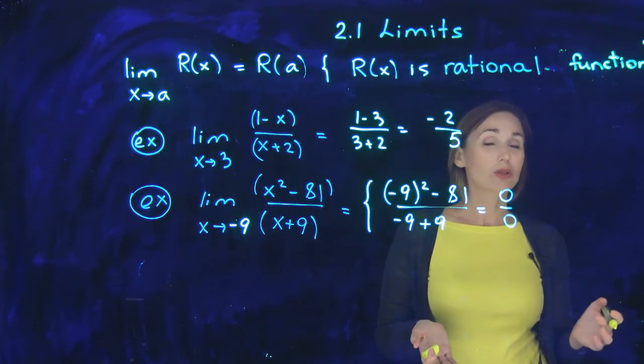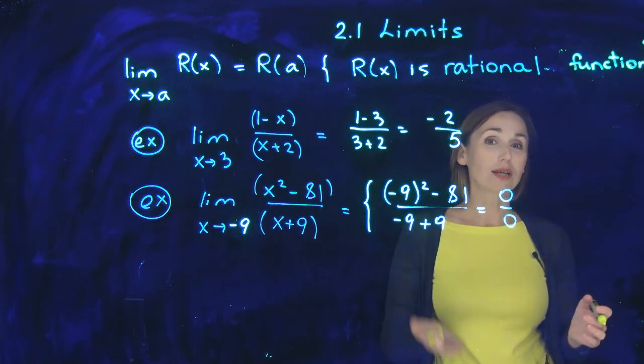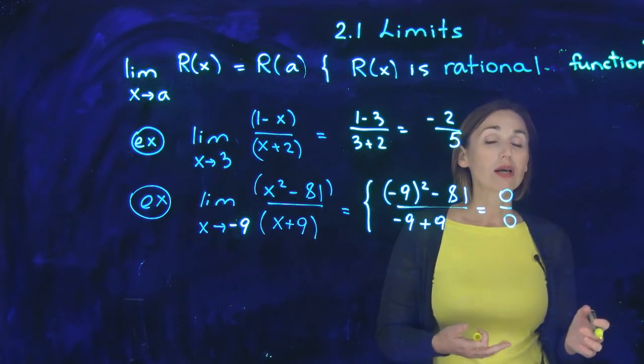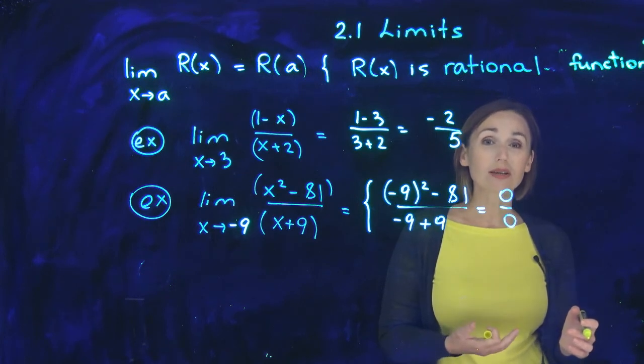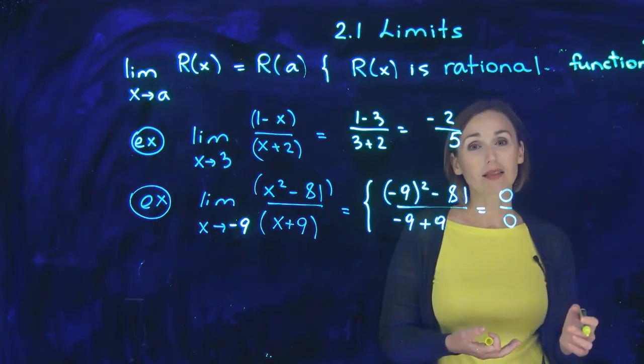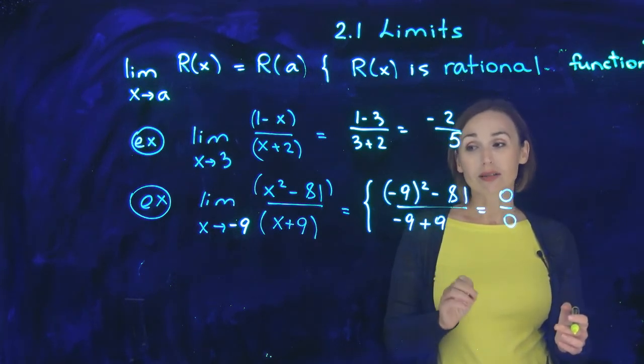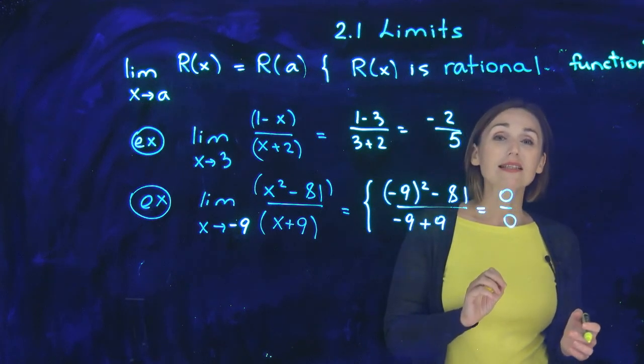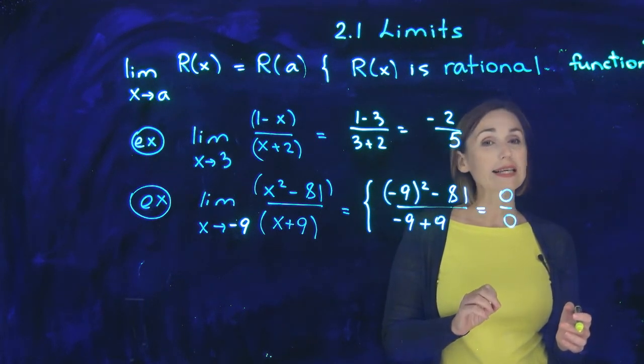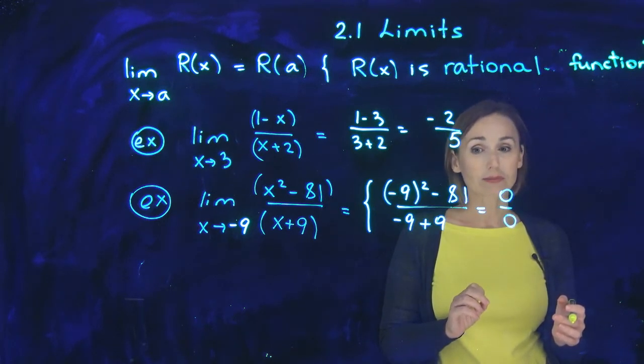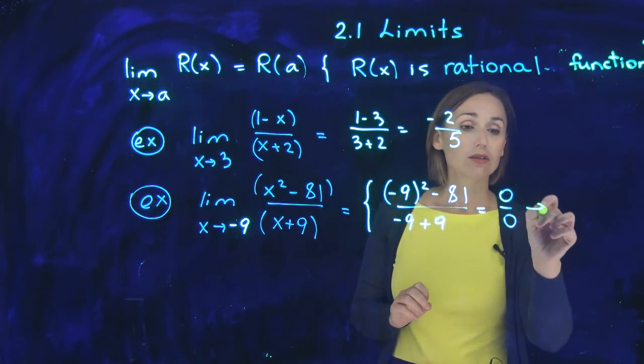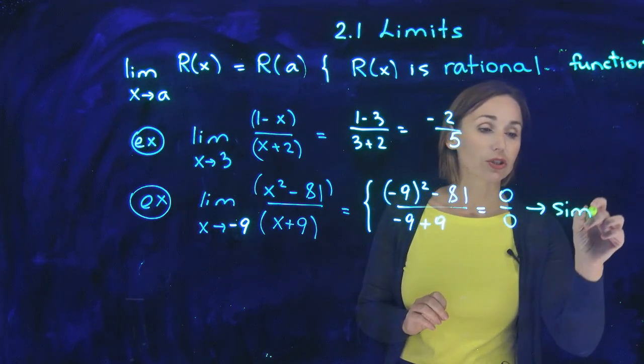What is 0 over 0? You do not know. 0 over a number will give you 0. A number over 0 will give you does not exist. But what is 0 over 0? It could be anything. So this is the sign for you: your function is not in the simplest form. You can simplify it. So simplify your function.